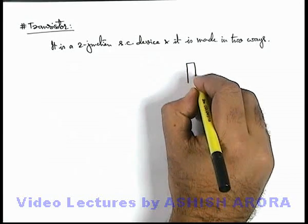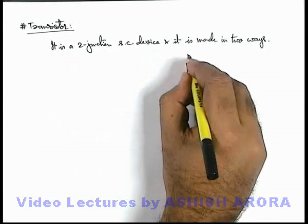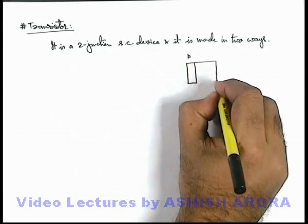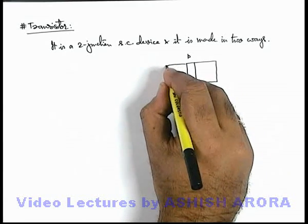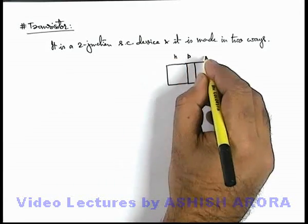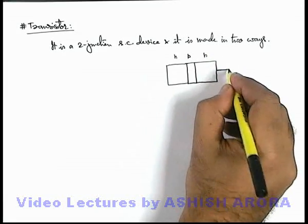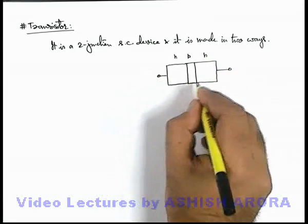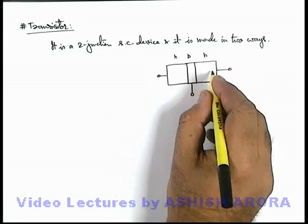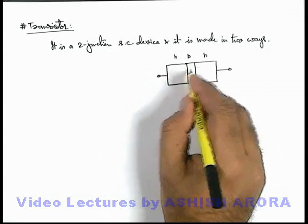One way is by taking a p-type semiconductor and we sandwich it between two n-type semiconductors from the two sides. This becomes an n-p-n transistor, and obviously as there are three semiconductors making two junctions.